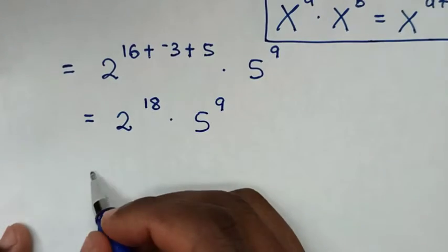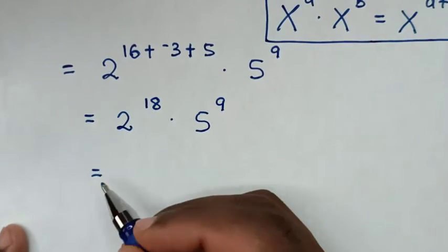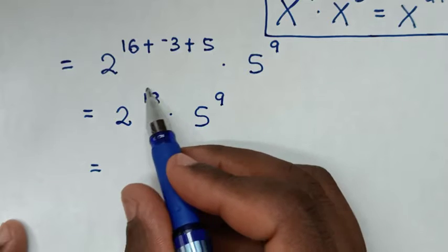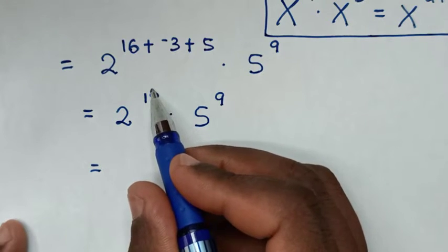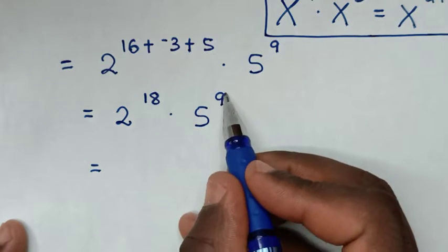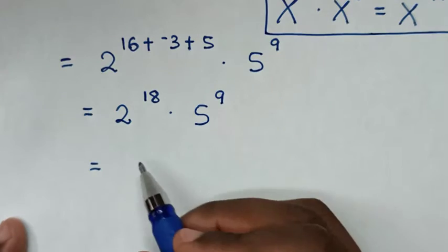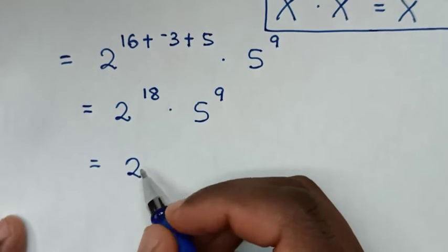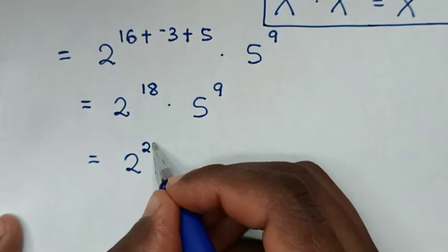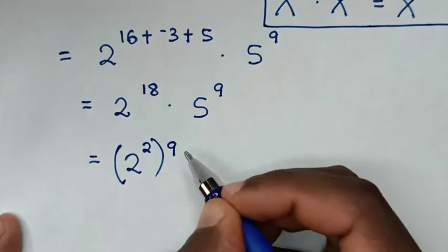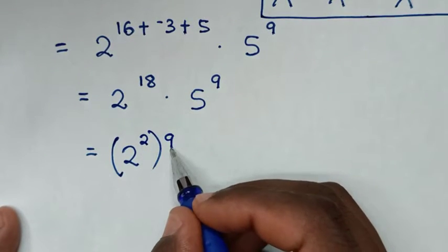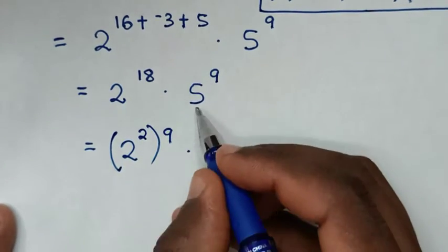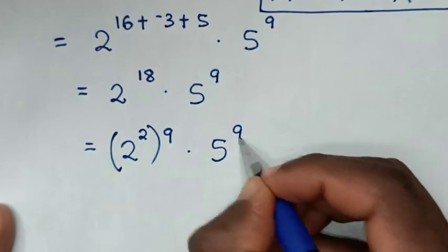Then in the next step, we make this exponent 2 power of 18 have the same power of 9. Power of 18 is the same as 2 power of 2, bracket power of 9, because 2 times 9 is 18. Then times 5 power of 9.